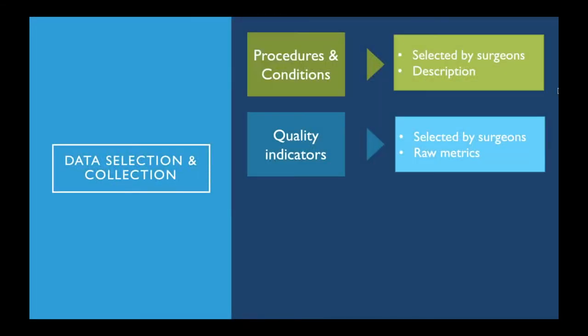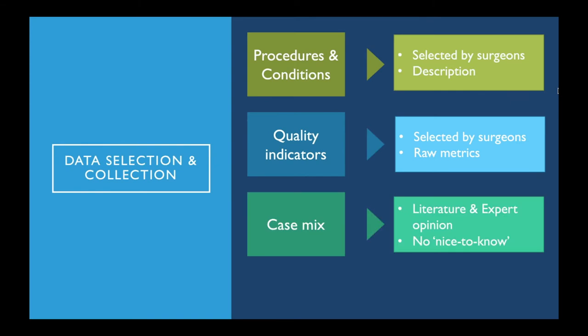The selection of the procedures, conditions, and metrics in QWAMS was done by BAMS members. This process drove the selection of variables necessary to describe those elements. Variables to adjust for case mix were chosen by expert opinion and literature reviews. QWAMS also tried to limit as much as possible the number of nice-to-know variables, and ultimately aimed to produce risk-adjusted quality metrics.